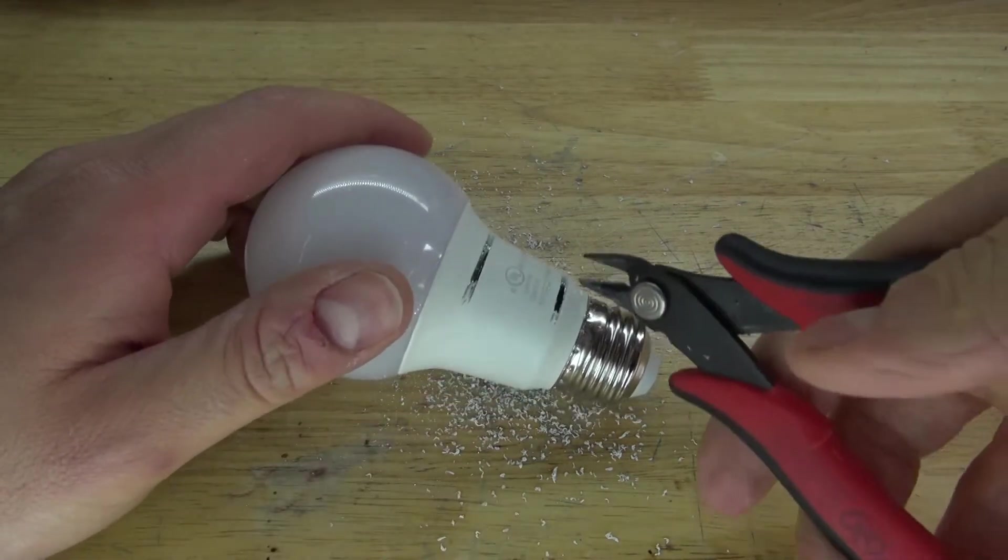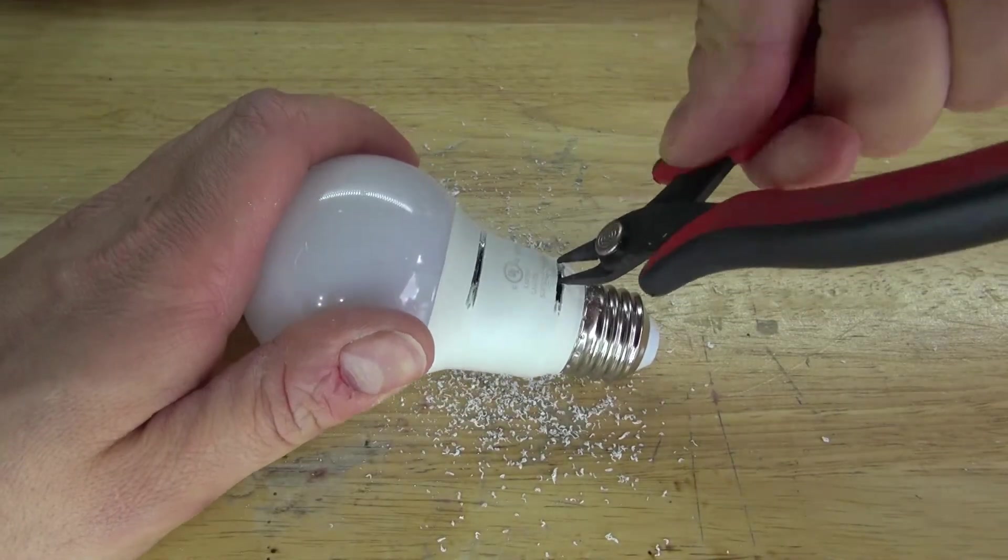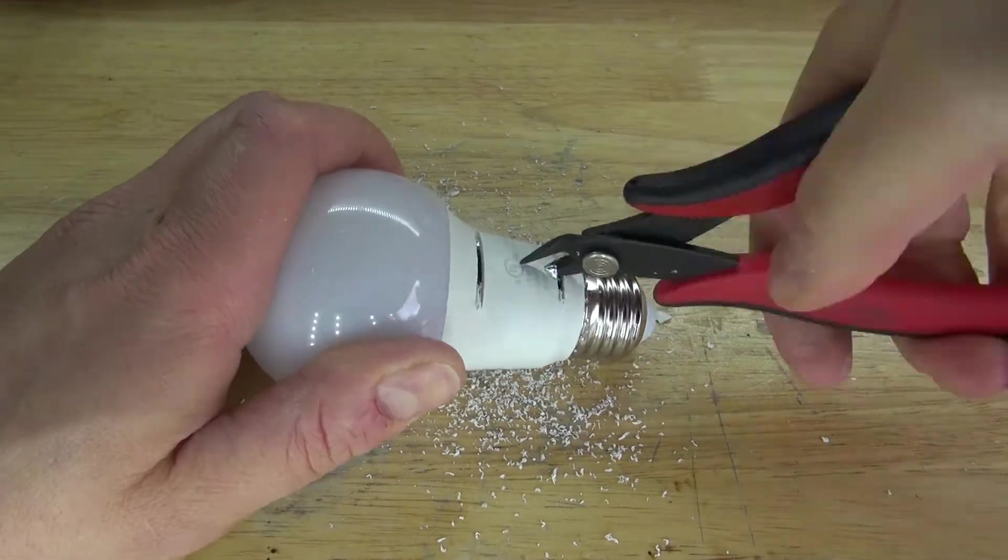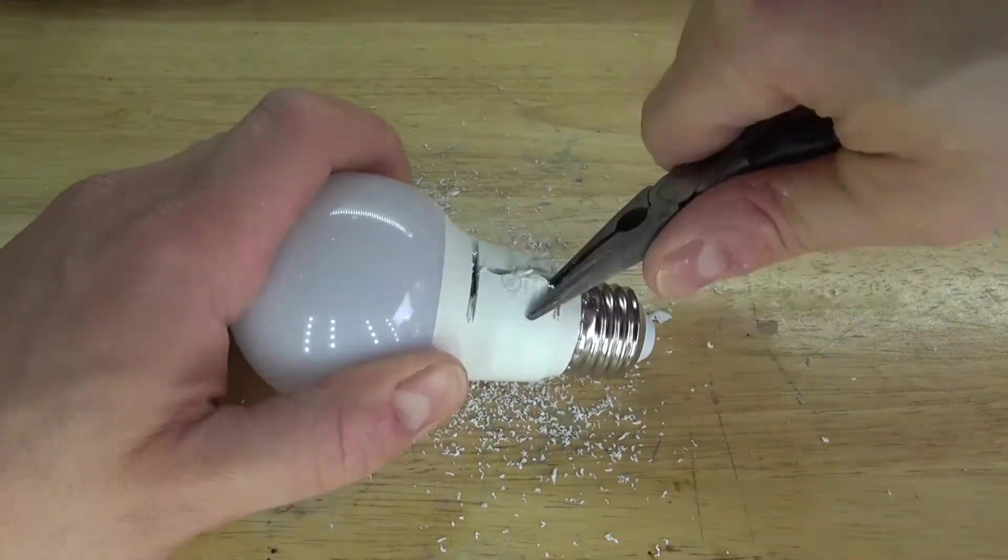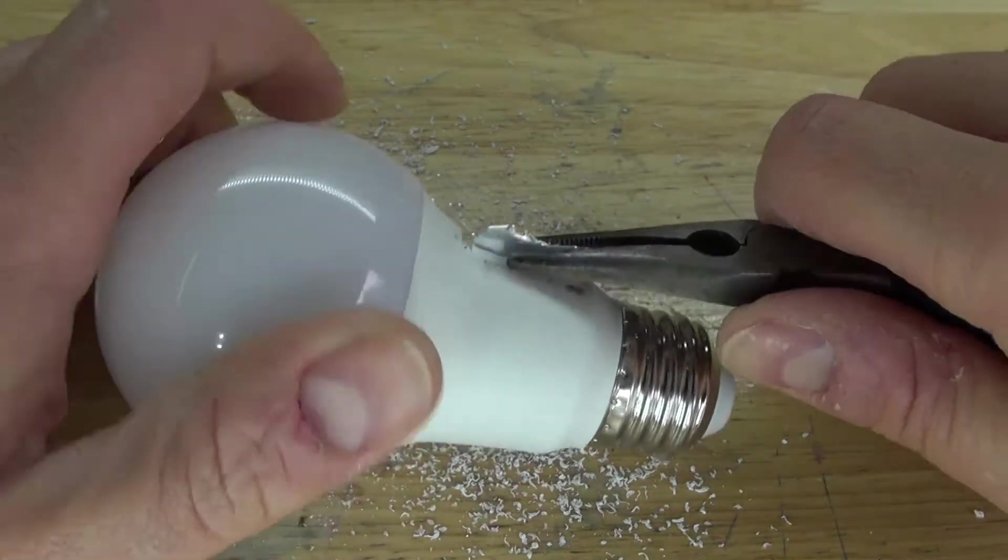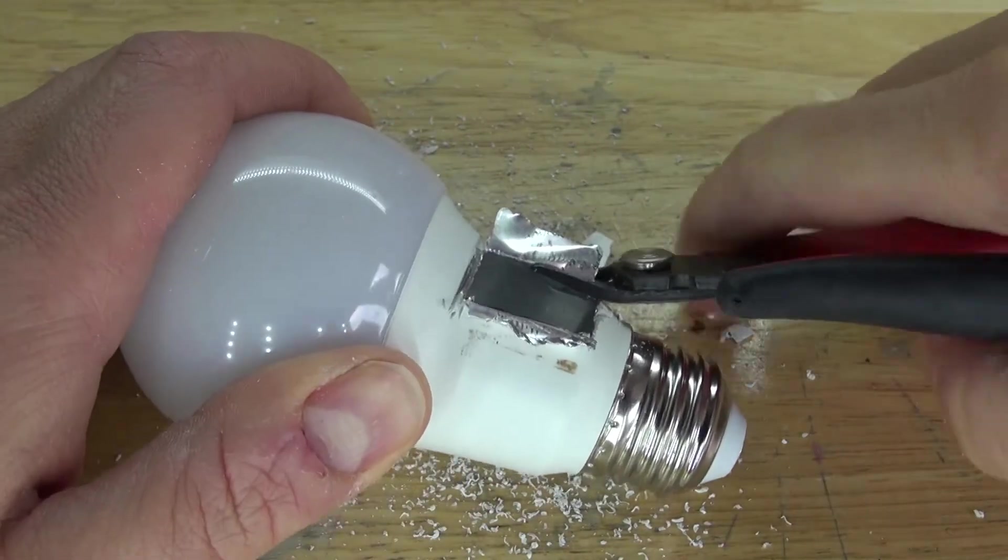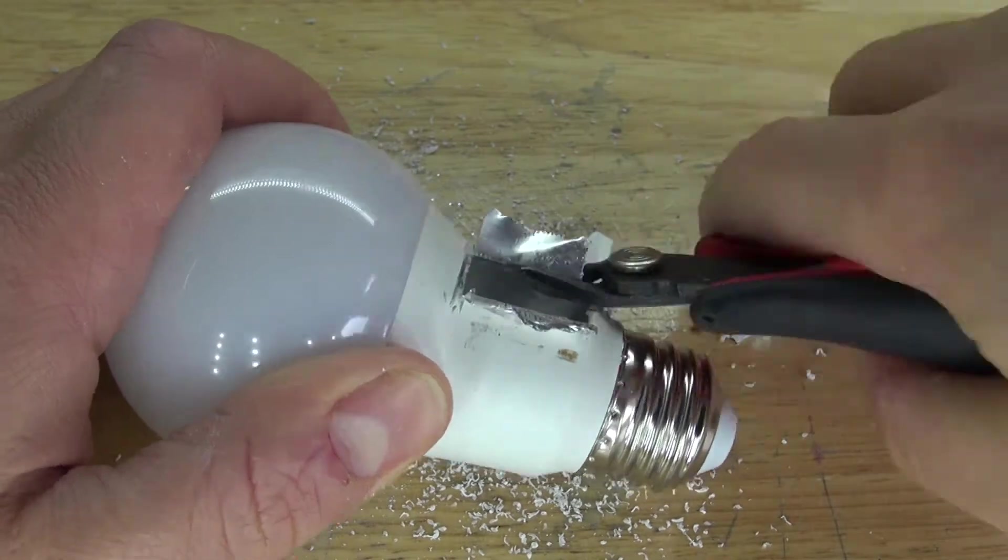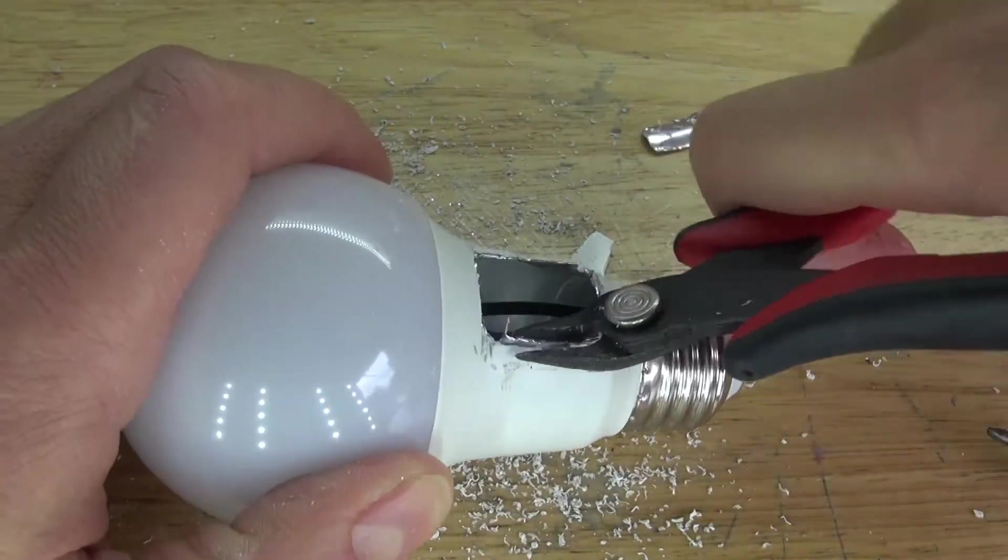Next I'm going to take these flush cutters, wedge it inside this gap and now simply cut the middle, pry it open, next cut off the excess and there now I have access to the wires.